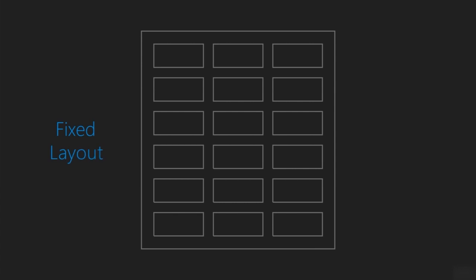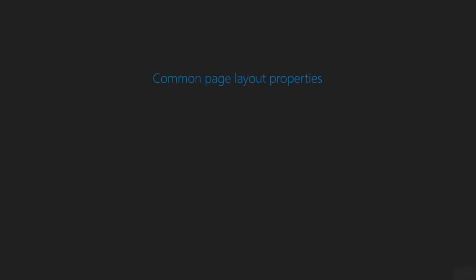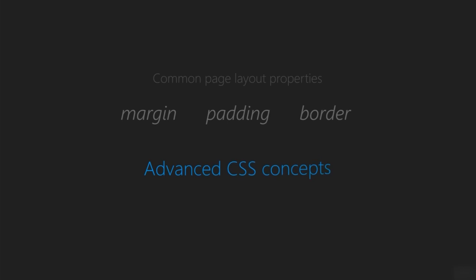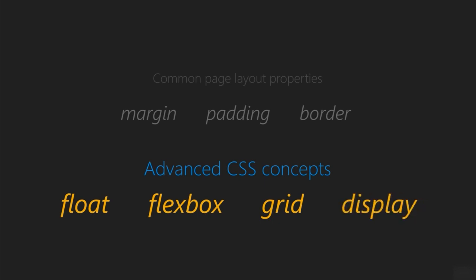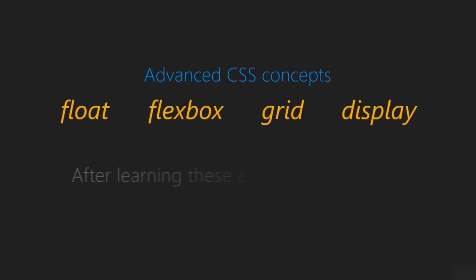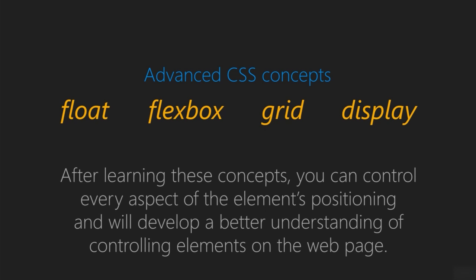By positioning, I mean elements, spacing, margin, arranging the elements in rows and columns — that is creating a grid layout or creating a fixed or responsive web page or designing a fluid layout and much more. We have seen some common page layout properties like margin, padding, or borders. But in this section, we will be looking at advanced CSS concepts like floats, flexbox, grid layout, and the display property. By the end of this section, you will be able to control every aspect of the elements' positioning and will develop a better understanding of how the elements get distributed on the web page.